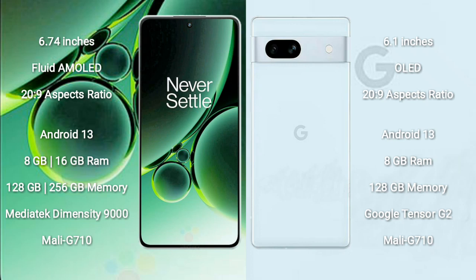OnePlus Nord 3 features the MediaTek Dimensity 9000 processor and GPU Mali-G710. Google Pixel 7a comes with 8GB RAM and 128GB internal storage.